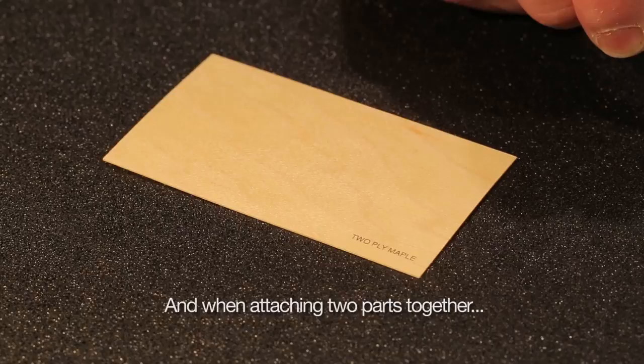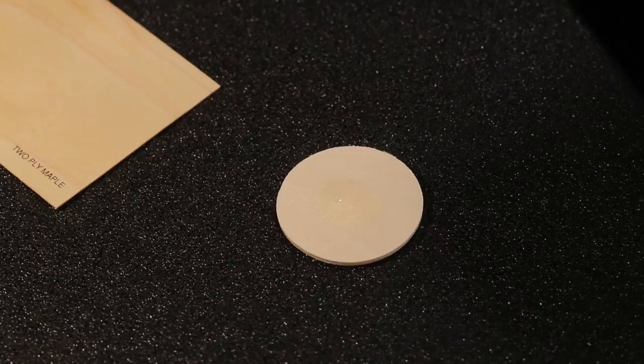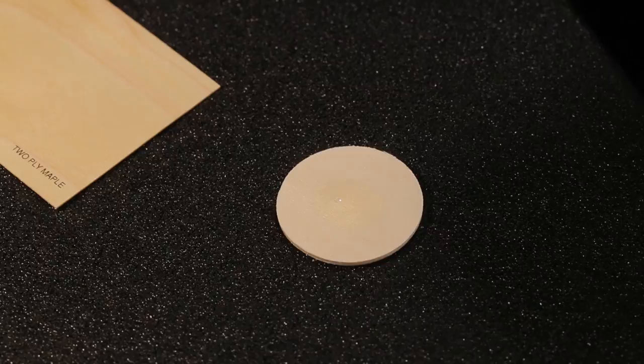Very fast and simple. Put some cyanoacrylate adhesive on one substrate. Spray the other substrate with Glue Boost. Put them together. Voila, that is done.